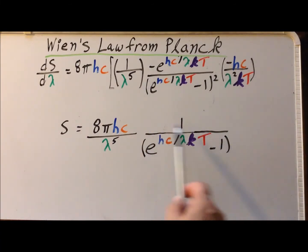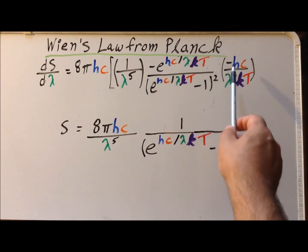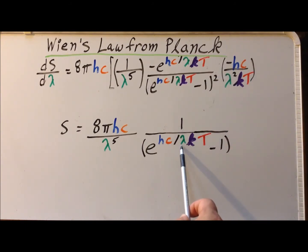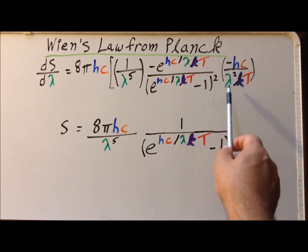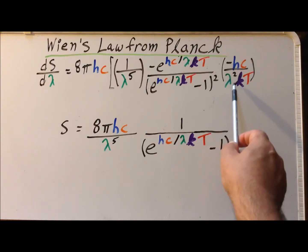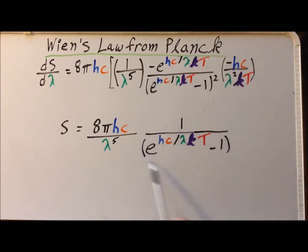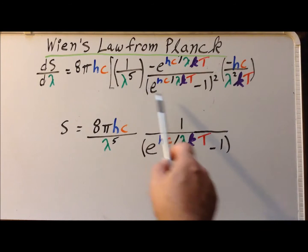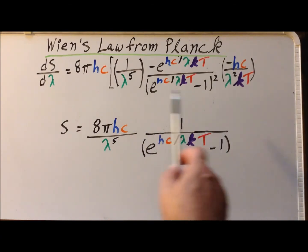The derivative of the bottom is the exponential expression times, because lambda is to the minus one power effectively, minus Hc over lambda squared kT. Then we square the denominator, giving us that expression squared. This gives us the first part of the product rule: the first function times the derivative of the second.